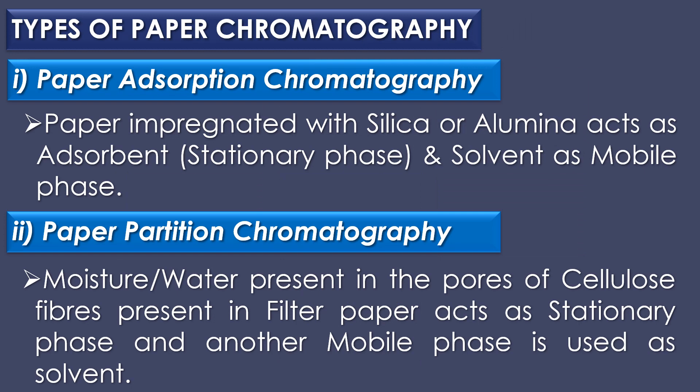In paper absorption chromatography, paper impregnated with silica or alumina acts as the absorbent or stationary phase and solvent as mobile phase. In paper partition chromatography, moisture or water present in the pores of cellulose fibers in the filter paper acts as the stationary phase and another solvent is used as mobile phase. In general, paper chromatography mostly refers to paper partition chromatography.